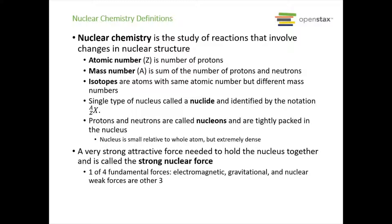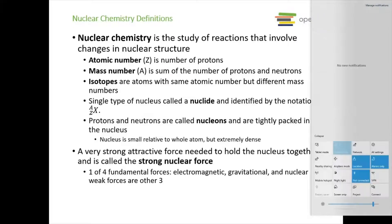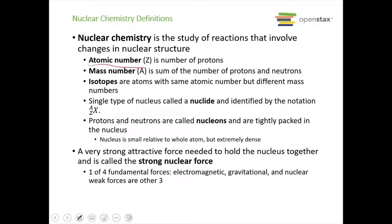Nuclear chemistry is the study of reactions that involve changes in nuclear structure. To review: atomic number, abbreviated Z, represents the number of protons. Mass number, abbreviated A, is the sum of the number of protons and neutrons. Isotopes are atoms that have the same atomic number but different mass numbers — they differ in the number of neutrons in the nucleus.